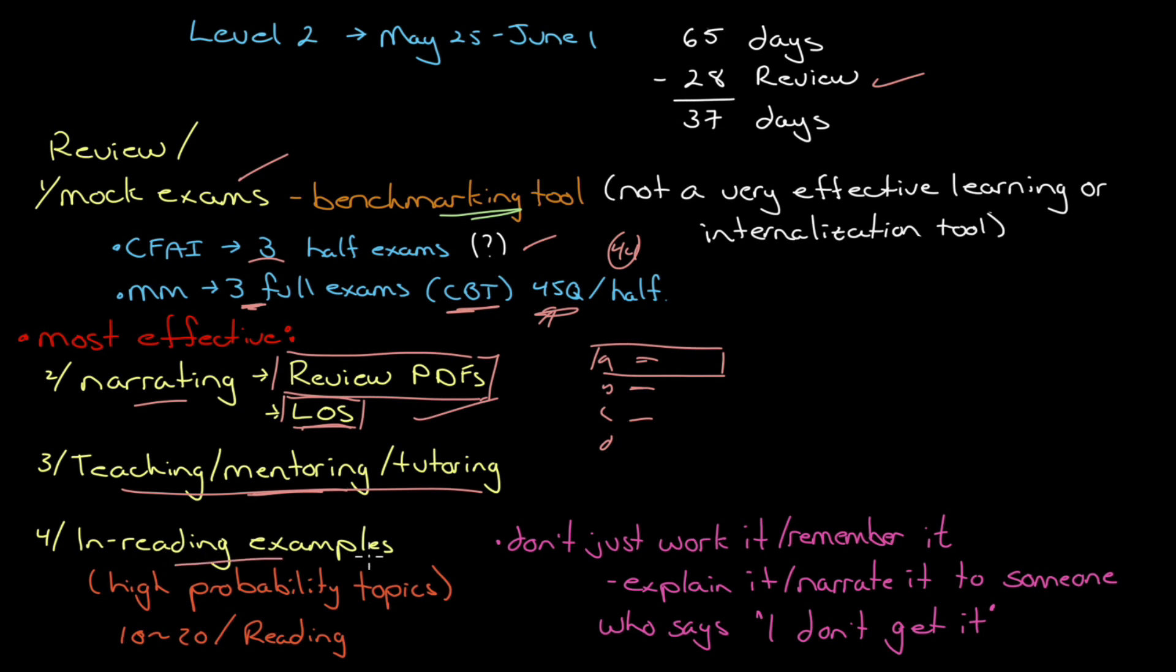So the in-reading examples. So if we're looking for high-probability types of topics that would be tested, not high-probability questions. I wouldn't look at the in-reading examples and say, aha, there's this, remember this question, you're going to get one just like it. But I would look at it in terms of, this is a high-probability topic, because it's deserving of an example and a walk-through. It's probably a high-probability topic. And every reading is about 10 to 20 of these.